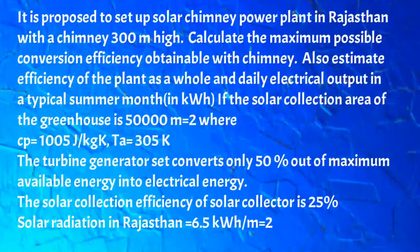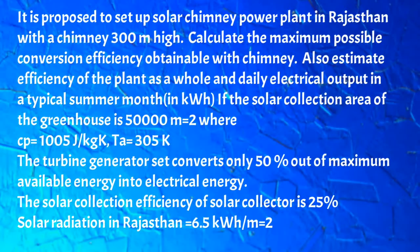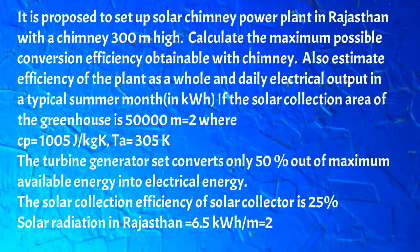It is proposed to set up a solar chimney power plant in Rajasthan with a chimney 300 meters high. Calculate the maximum possible conversion efficiency obtainable with the chimney, estimate the efficiency of the plant as a whole, and the daily electrical output in a typical summer month in kilowatt-hour. Solar collection area of greenhouse is 50,000 m², specific heat cp = 1005 J/kg·K, ambient air temperature = 305 K, turbine-generator set converts 50% of maximum available energy into electrical energy, collection efficiency of solar collector is 25%, and solar radiation in Rajasthan is 6.5 kWh/m².